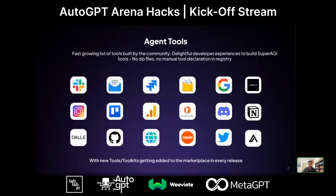Our agent tools are growing with more and more tools added to the platform. The experience of building a tool is very simple — you don't need any zip file or manual declaration in a registry. You just have a GitHub repo of a tool, pull it into your SuperAGI instance, both cloud and local versions. More tools are being added with almost every single release.